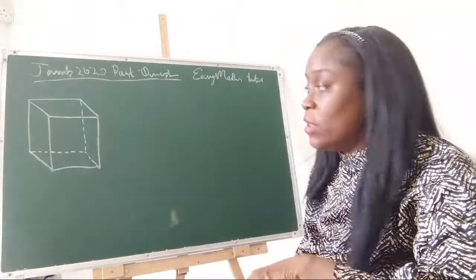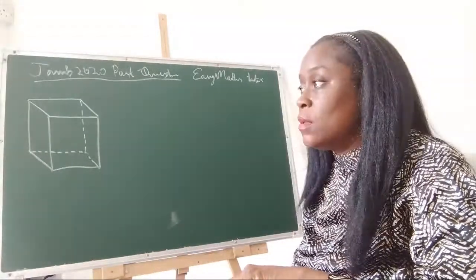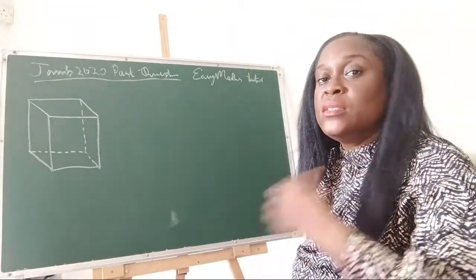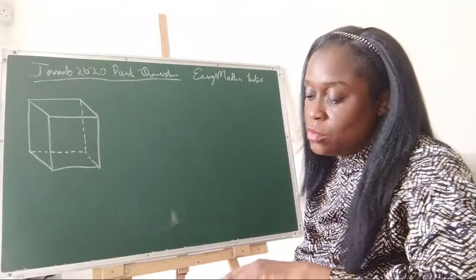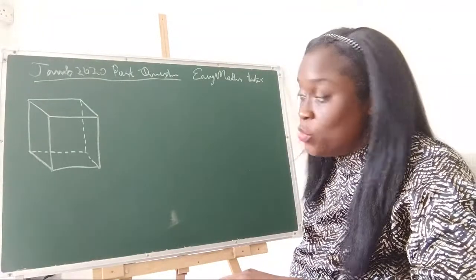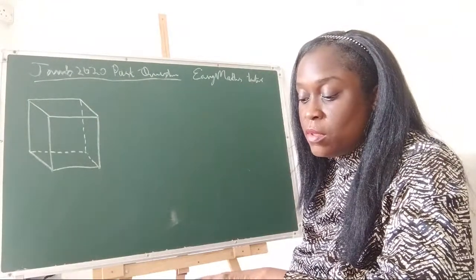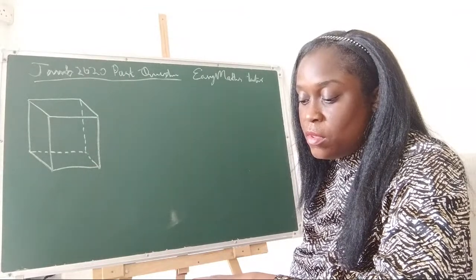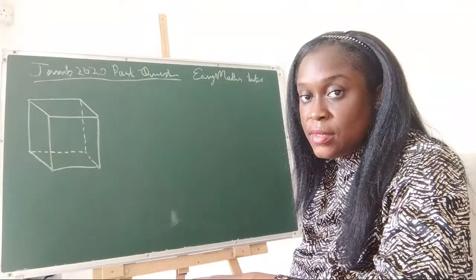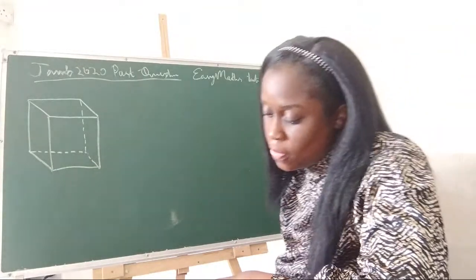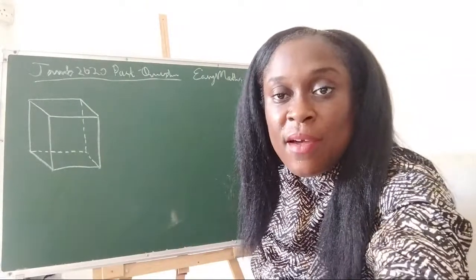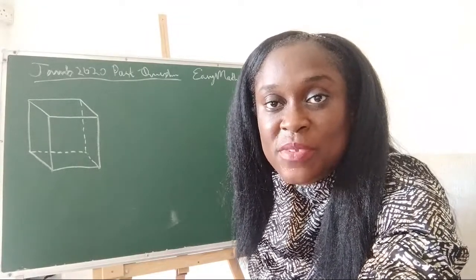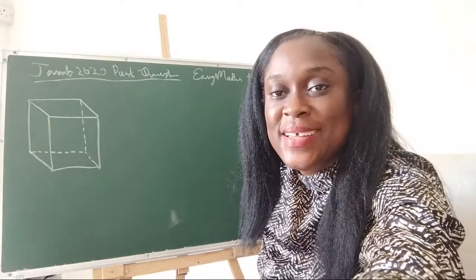Those of you with your JAMB exams coming up this week and next week can quickly catch up on your mathematics. Maths is compulsory for some courses in JAMB. The question says a room is 12 meters long, 9 meters wide, and 8 meters high.